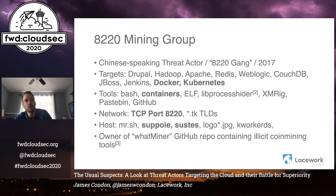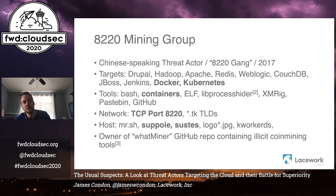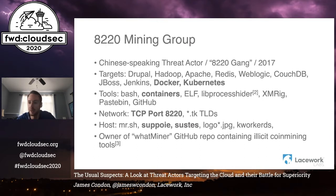The first group I want to talk about is the 8220 Mining Group. Talos did a lot of the initial reporting on this group; they're believed to be a Chinese-speaking threat actor, also going by the name '8220 Gang,' and have been active since at least 2017. Their targets are things you'd probably imagine: likely misconfigured, internet-facing, unpatched — things like Drupal, Apache, Redis, JBoss, and Jenkins. One interesting thing with this group is seeing a lot of targeting of Docker and also Kubernetes. This seems to be a little more common with the 8220 Mining Group.